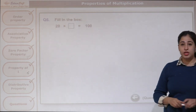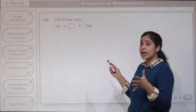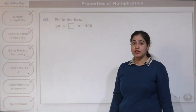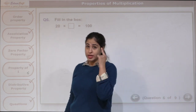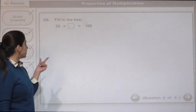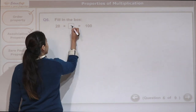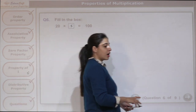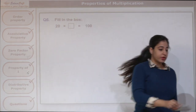Next question, revision of multiplication: 20 times what gives us 100? Quickly multiply in your minds. 20 times 5 gives us 100.